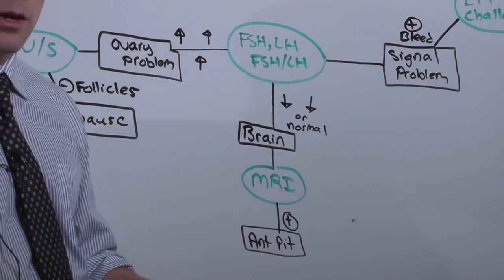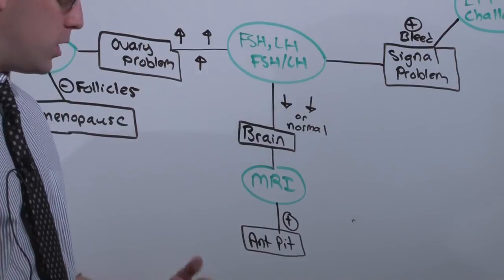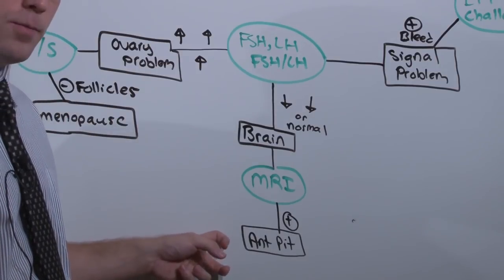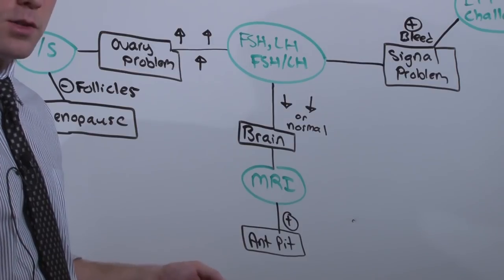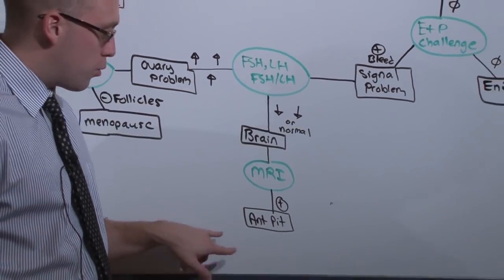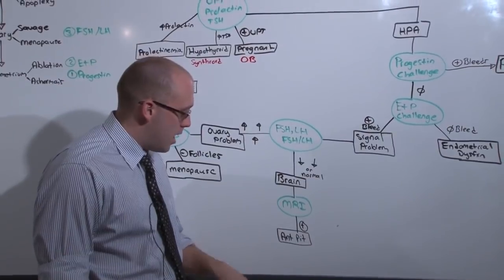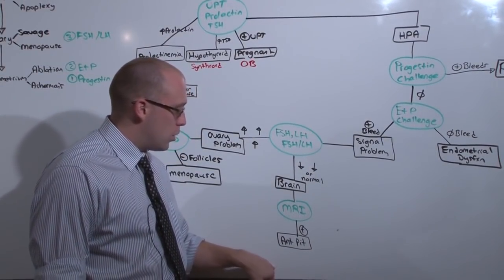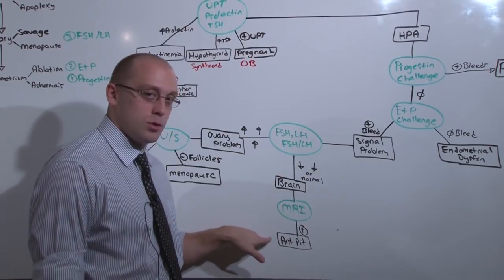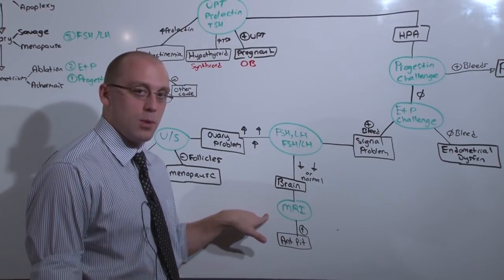The other one is apoplexy. Apoplexy is the same thing. In apoplexy, you have a preexisting tumor, that OMA, but the OMA exceeds its own blood supply and infarcts and necroses. All three conditions of the anterior pituitary, Sheehan's apoplexy and some other adenoma, will cause decreased functioning of the anterior pituitary and will be identified on MRI.